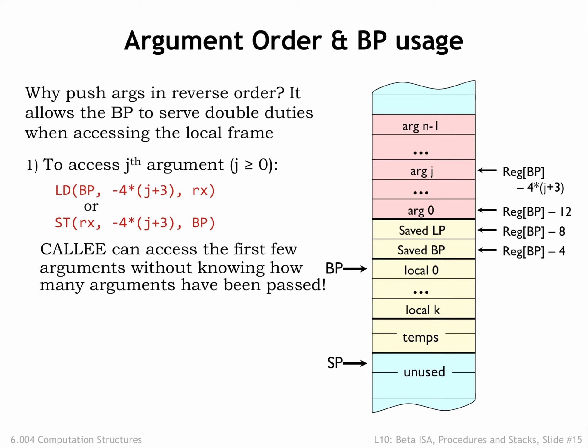Why is this important? Some languages, such as C, support procedure calls with a variable number of arguments. Usually the procedure can determine from the first argument how many additional arguments to expect. The canonical example is the C printf function, where the first argument is a format string that specifies how a sequence of values should be printed. A call to printf includes the format string argument plus a varying number of additional arguments. With our calling convention, the format string will always be in the same location relative to BP, so the printf code can find it without knowing the number of additional arguments in the current call.